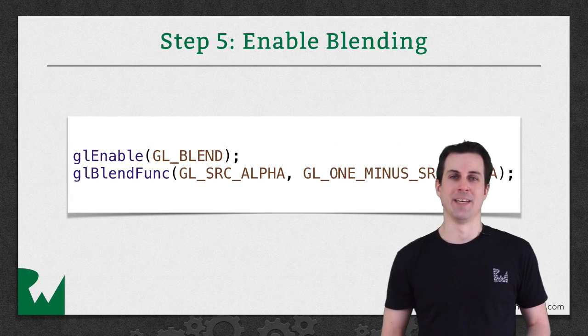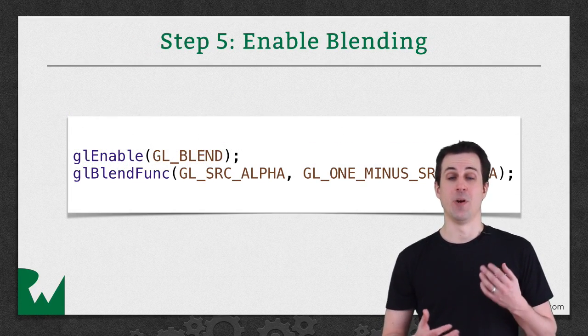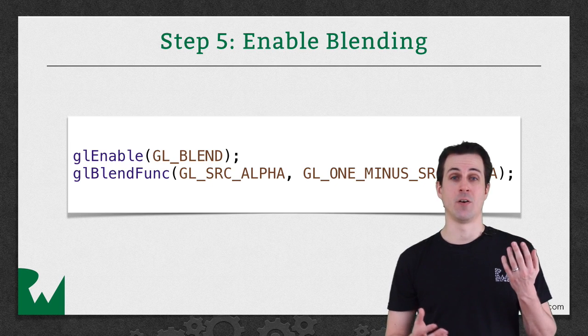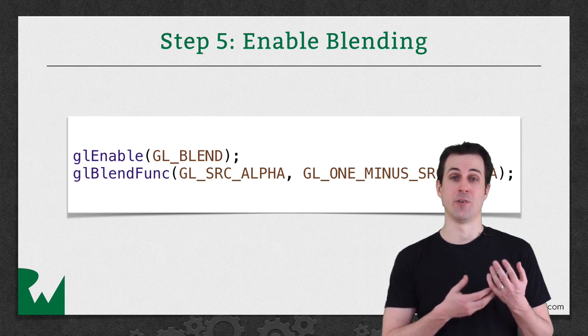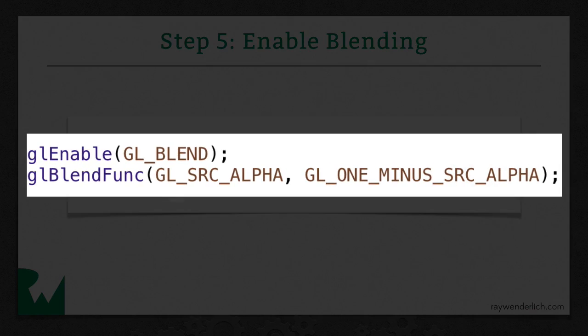The last thing you need to do is enable blending. This is so OpenGL knows what to do when it's taking one color and drawing it on top of another color and there's some transparency involved. So there's just two lines of code like you see here. And the configuration options you see here pretty much set up the blending to work the way you'd expect. So if you have a red color and you're drawing a black color on top of that that has, say, a 50% alpha, it will be blending a gray color on top of the red color.